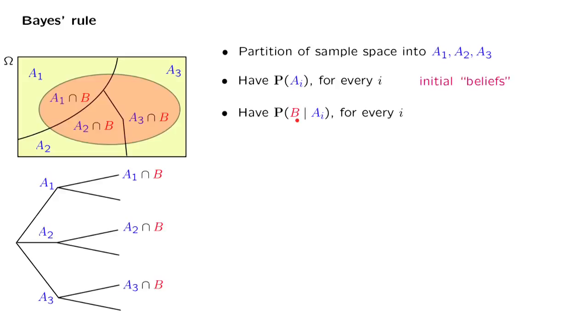Then the probabilistic experiment is carried out, and perhaps we observe that event B did indeed occur. Once that happens, maybe this should cause us to revise our beliefs about the likelihood of the different scenarios. Having observed that B occurred, perhaps certain scenarios are more likely than others.